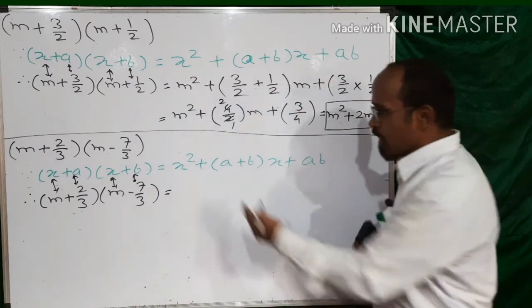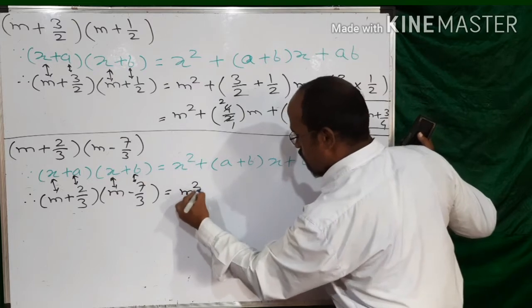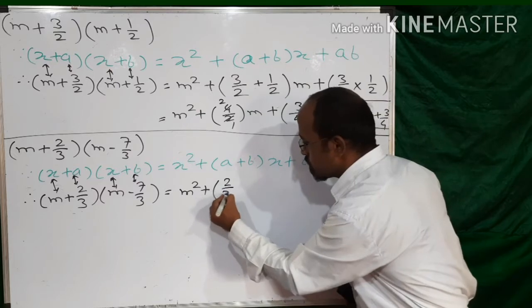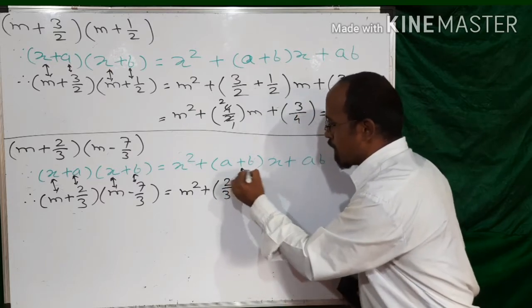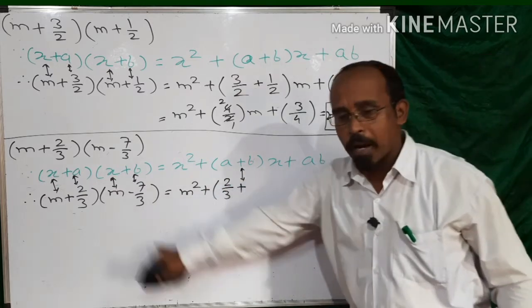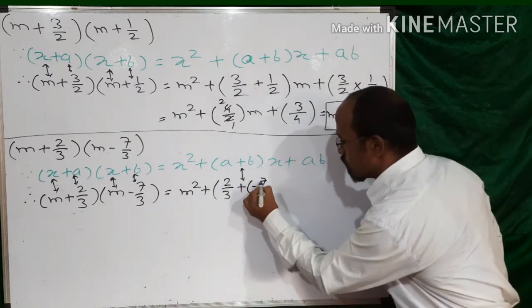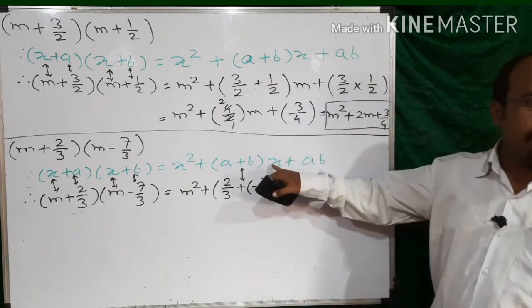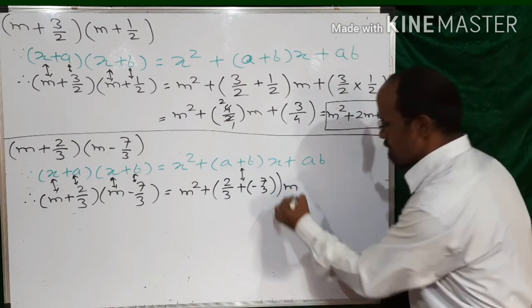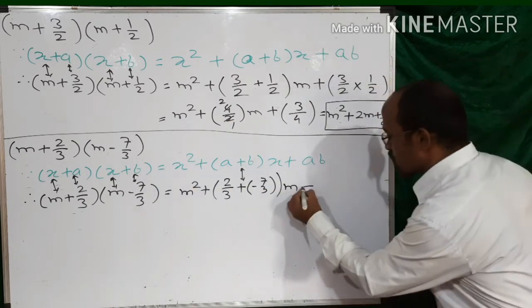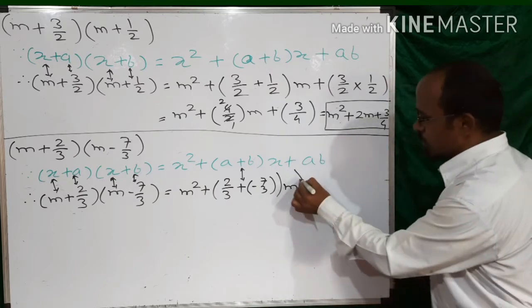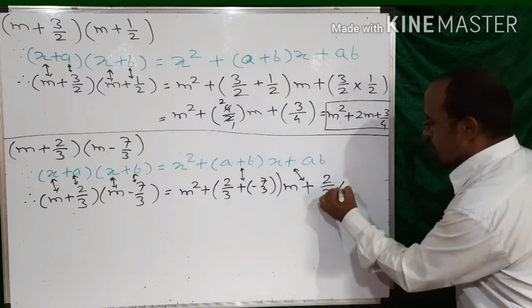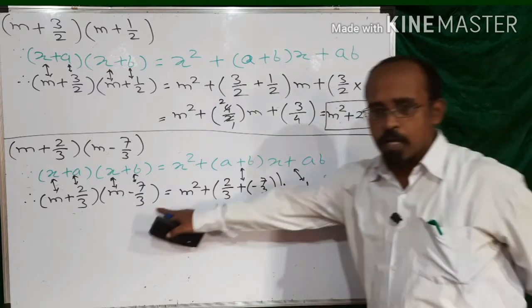So let us replace: x² means m², plus into the bracket — a is +2/3, plus b is −7/3, so write it as −7/3, into x which is m. Plus a multiplied by b: a is replaced by +2/3, multiplied by b which is −7/3.